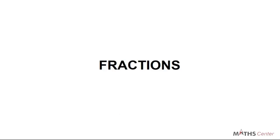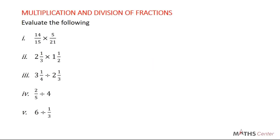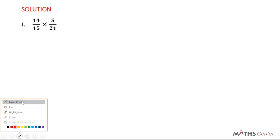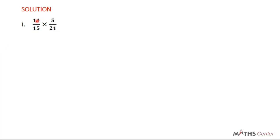In the previous video we learnt how to add and subtract fractions. In this video we are going to learn how to multiply and divide fractions. We are being told to evaluate the following, and we have been given questions 1 through 5. We pick the first one: 14 over 15 times 5 over 21. Whenever we are being told to multiply fractions, the ultimate aim is that you multiply the numerator by the numerator and the denominator by the denominator. But usually you will have some common factors that we can cancel so that our final multiplication gives us the answer in simplest form.